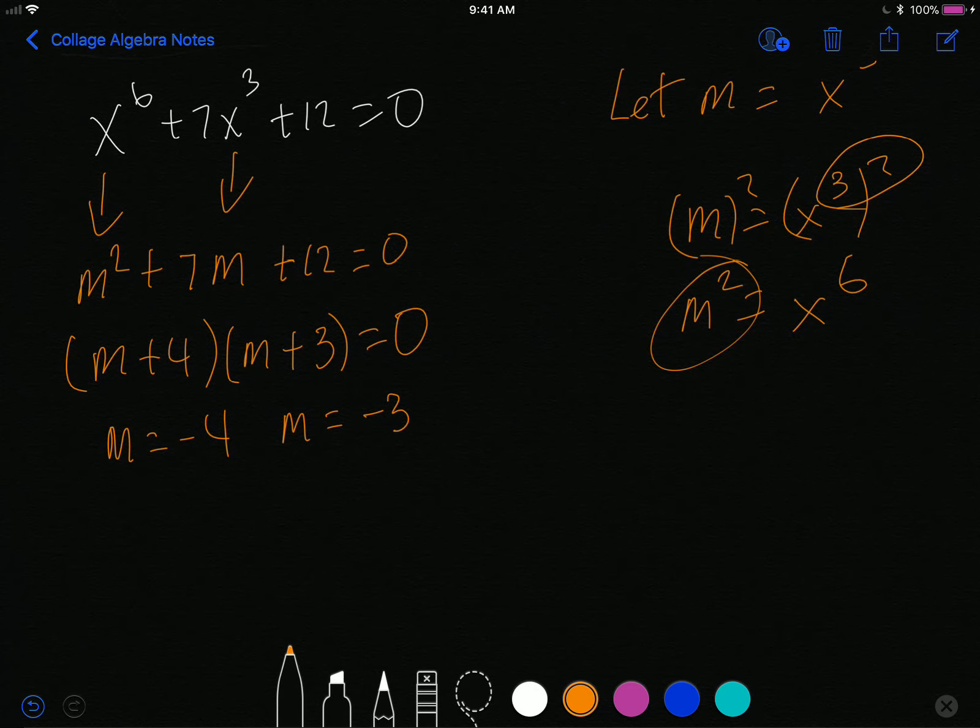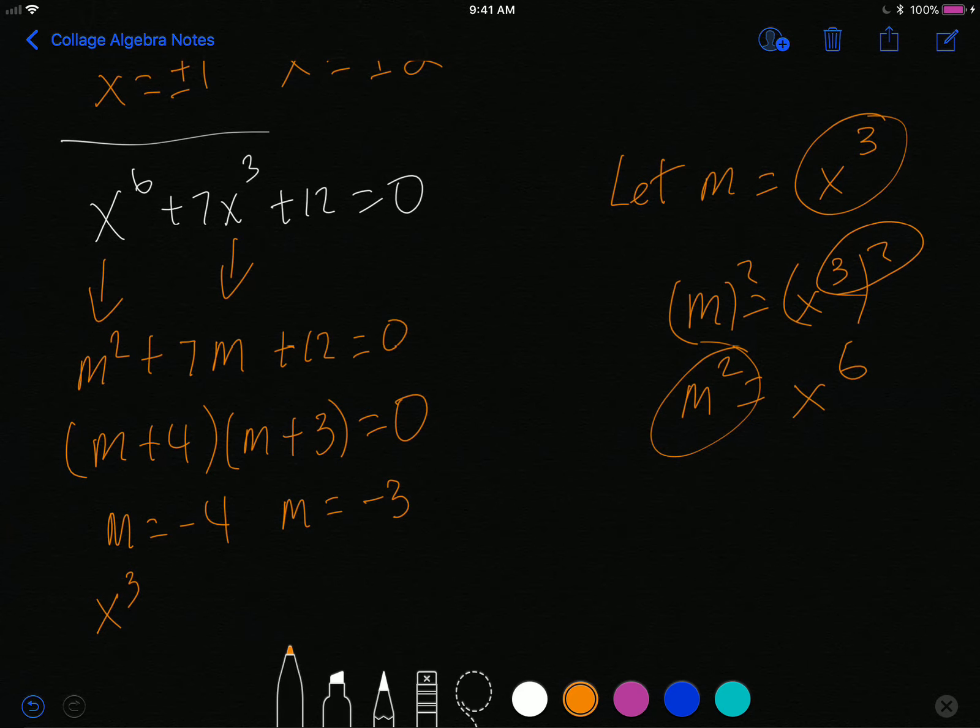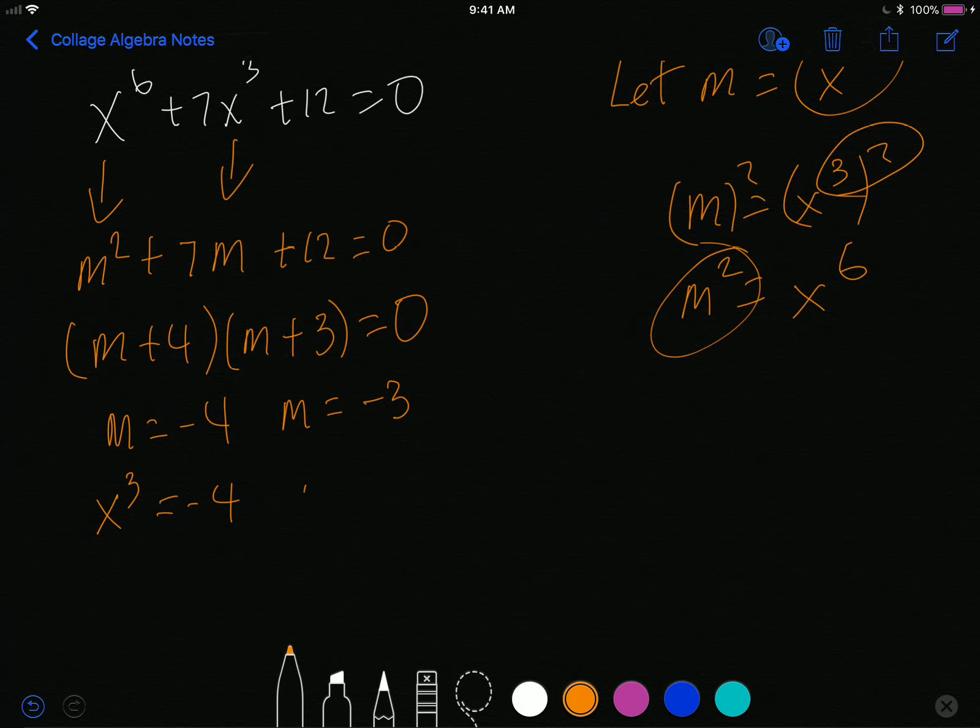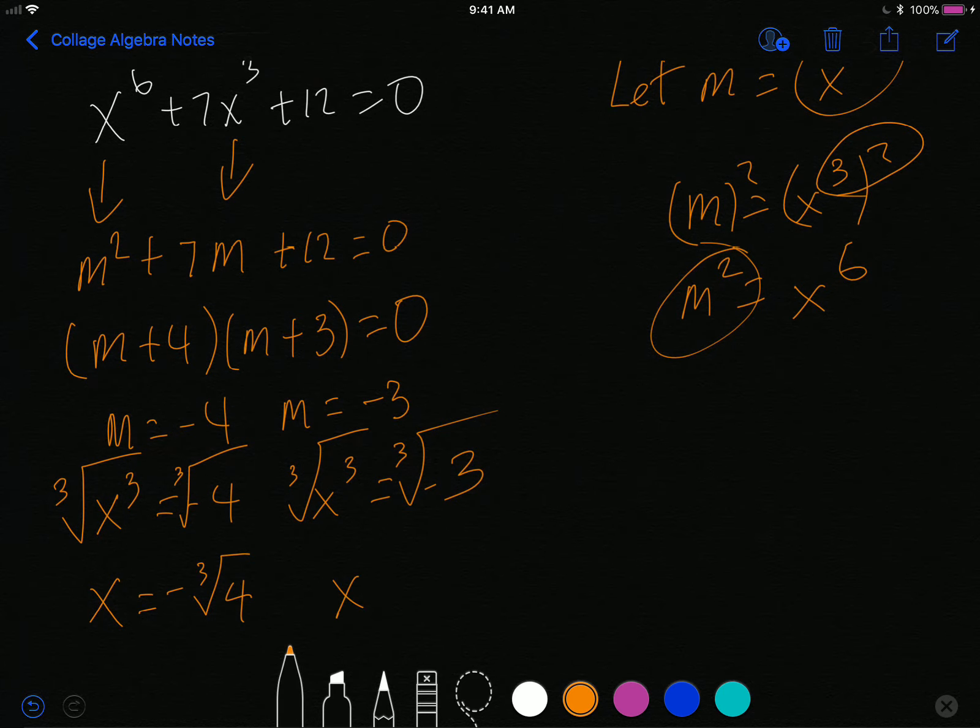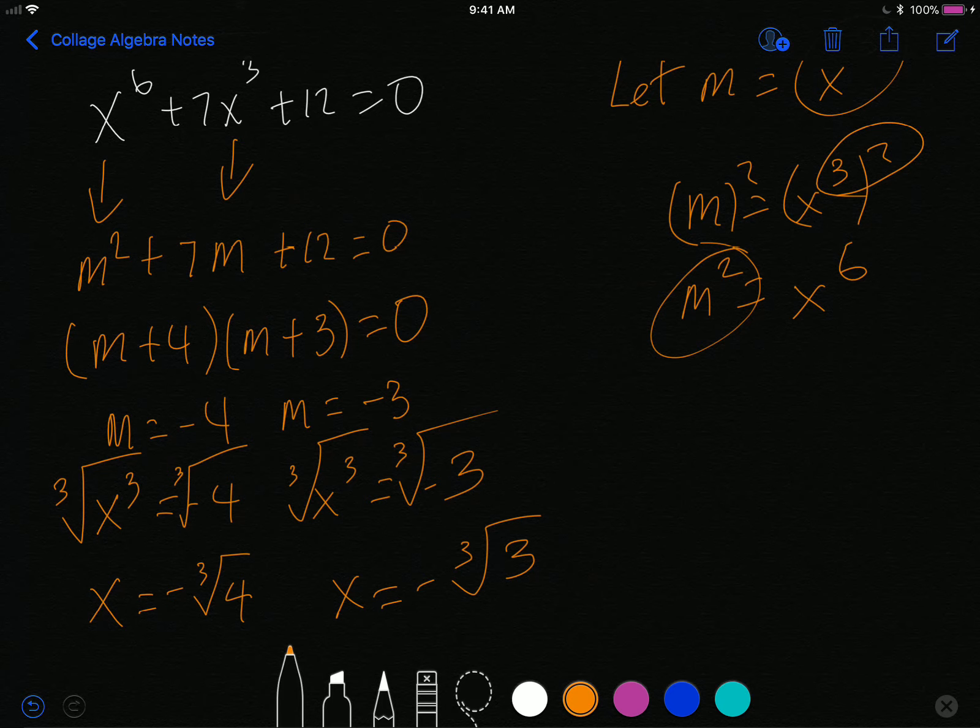Again, I'm not finished. I replace the m with the original variable, x to the third power. So x to the third is equal to negative 4. m is equal to x cubed is equal to negative 3. And then I take the third root on both sides. So I get that x is equal to negative third root of 4. And x is equal to negative third root of 3. The third root does not produce plus or minus solutions. And since we're only taking the real solutions, these right here will be our only two solutions to the equation.